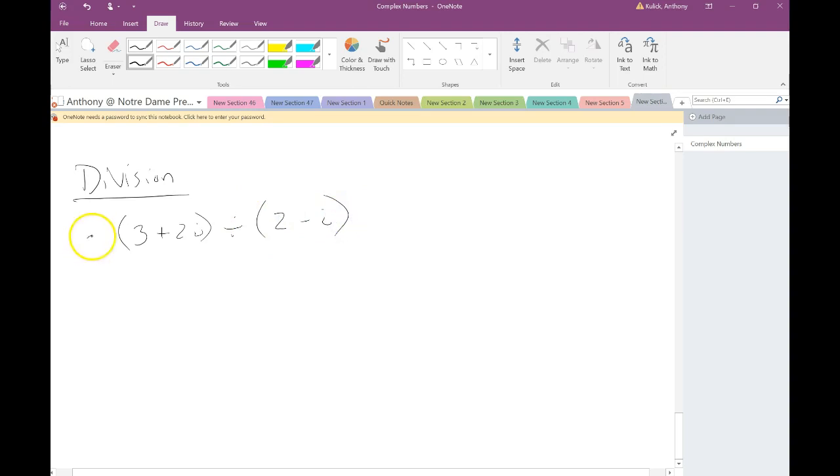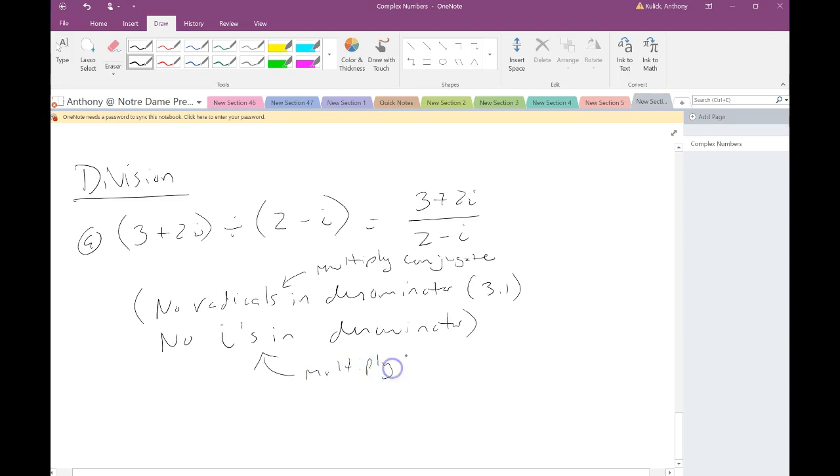And now I'll combine my like terms. So I notice 5i plus 5i, that gives me 0i. So I just won't write anything. And i squared is negative 1. So negative 25 times negative 1 is positive 25. So 9 plus 25 is 34. Notice here we have a real number. So there's no imaginary part here. That's going to become quite important when we talk about division.